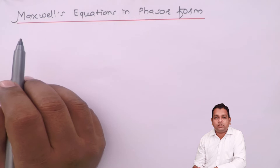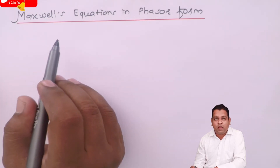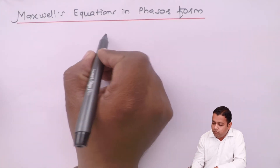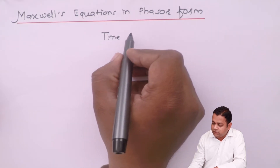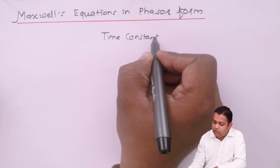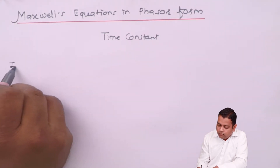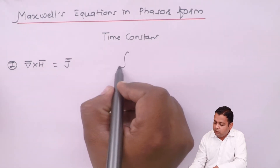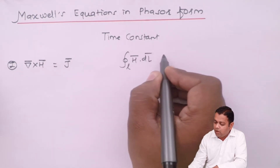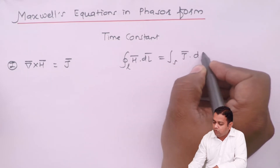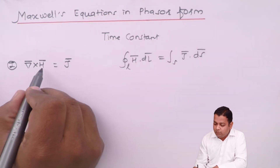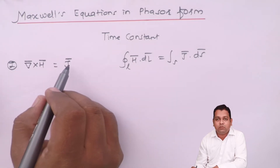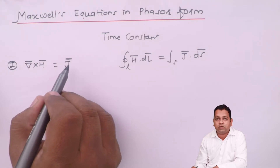Maxwell's Equations are a summary of the laws and theorems we have learned for Electrostatics and Magnetostatics, right from Gauss's Law and Ampere's Circuital Law. For Time Constant Fields, we have both the Integral Form and the Point Form. The first equation is: Del cross H̄ = J̄, and in integral form, the closed line integral of H̄·dL̄ equals the surface integral of J̄·dS̄. Here H̄ is the magnetic field intensity, and the curl of H̄ equals J̄, the conduction current density.